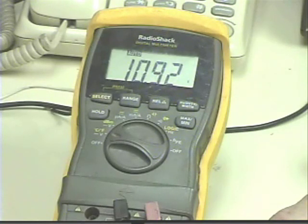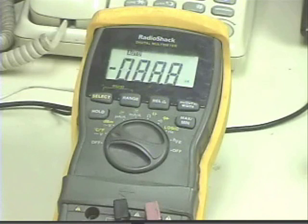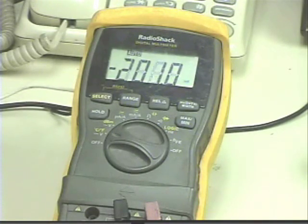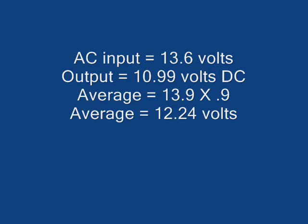The question is, does the voltage readings match the theory in the book? Let's find out. In this case, we had an AC input voltage of 13.6 volts, but we measured an output of 10.99 volts DC.